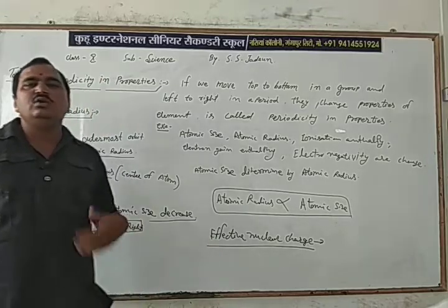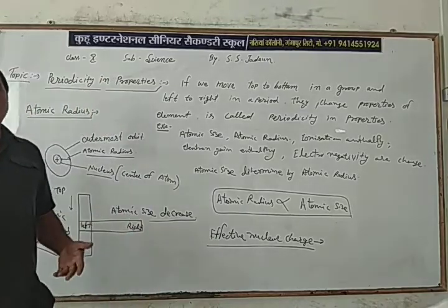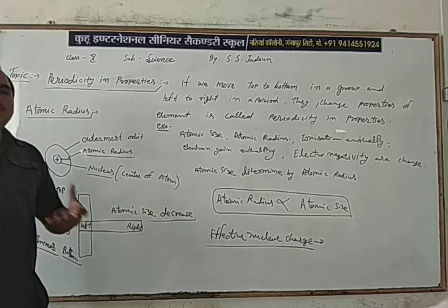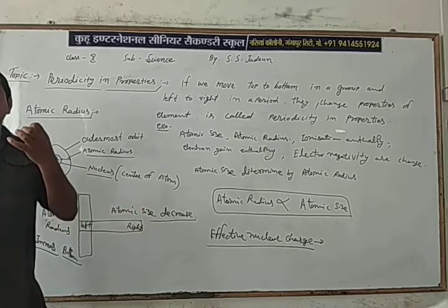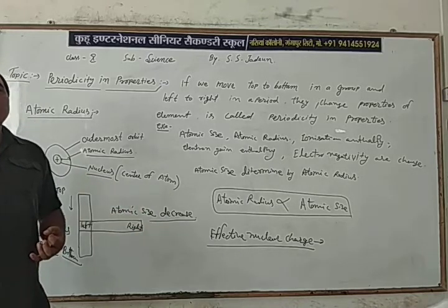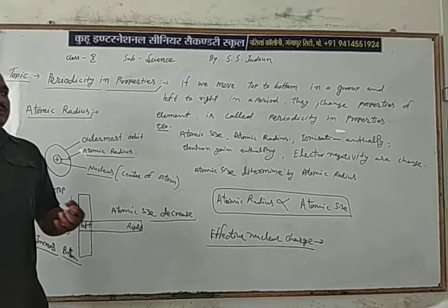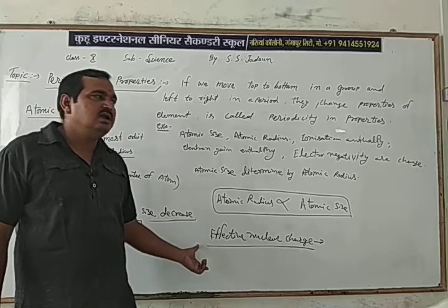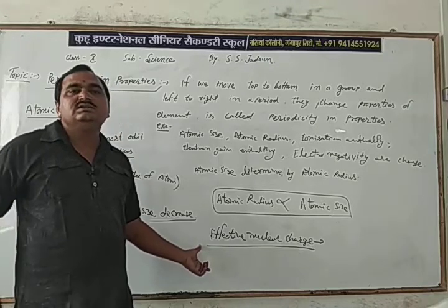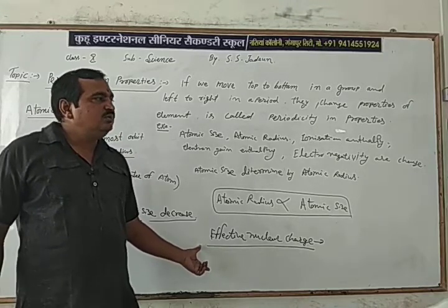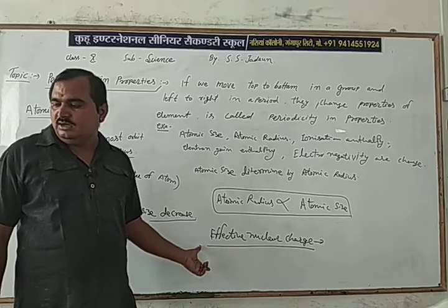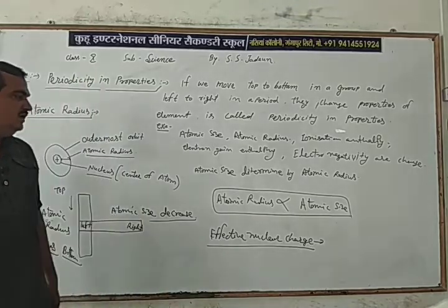If the outer orbital electron count increases, then the attraction with the nucleus increases and the atomic size decreases. So effective nuclear charge — when moving left to right or top to bottom — changes accordingly, and this affects the atomic size.